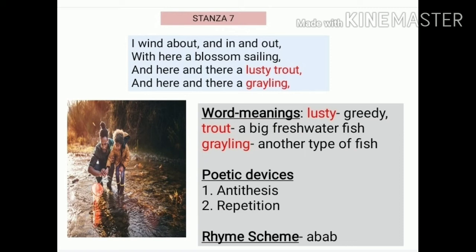In this stanza the poet is comparing a man's life experience with the brook. The blossom sailings are the happy instances of life. And lusty, meaning greedy, represents the bad experiences in man's life. Another thing — grayling refers to the shades of grey, that is neither being happy nor sad — they are the normal experiences that humans face.